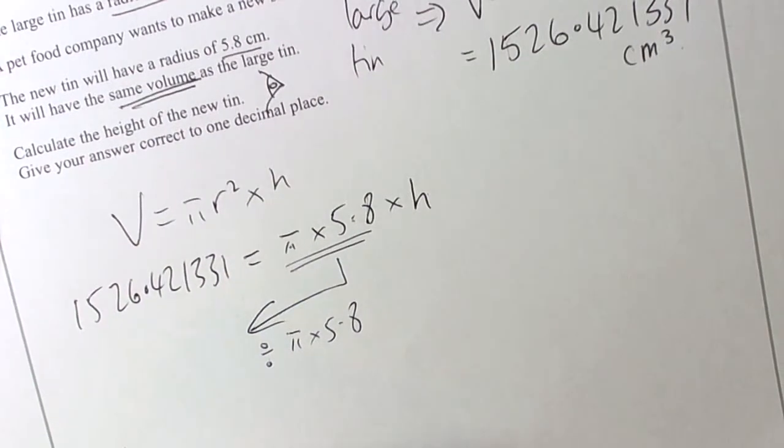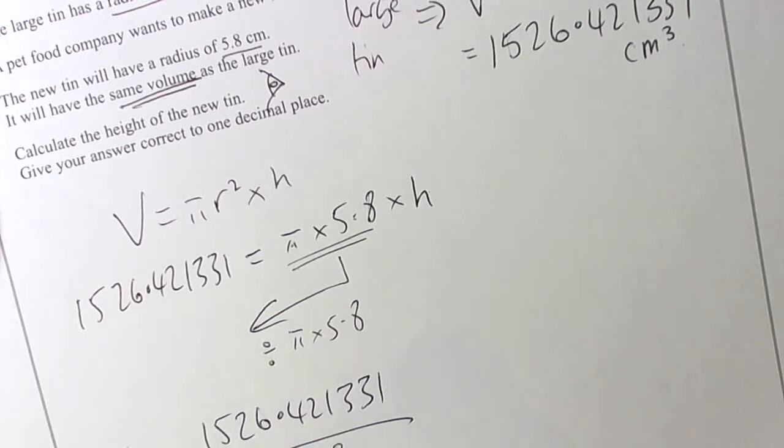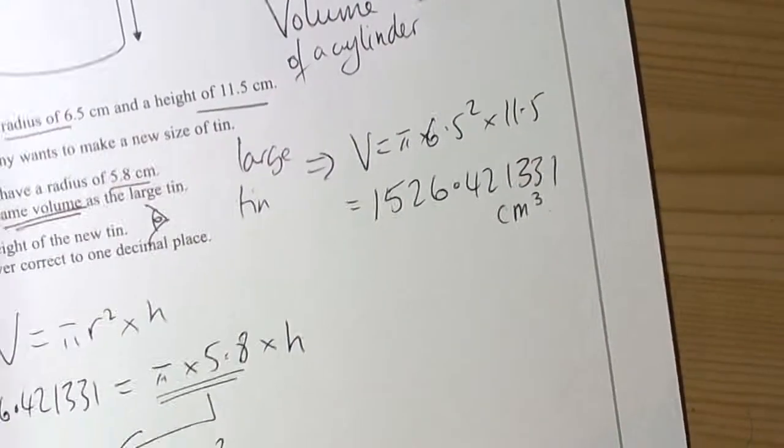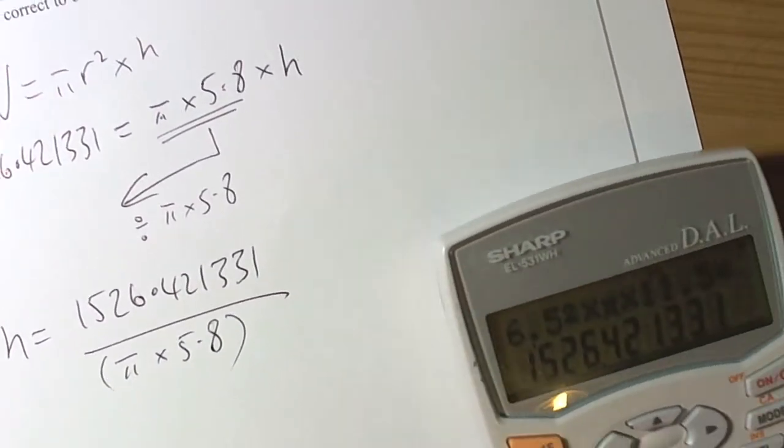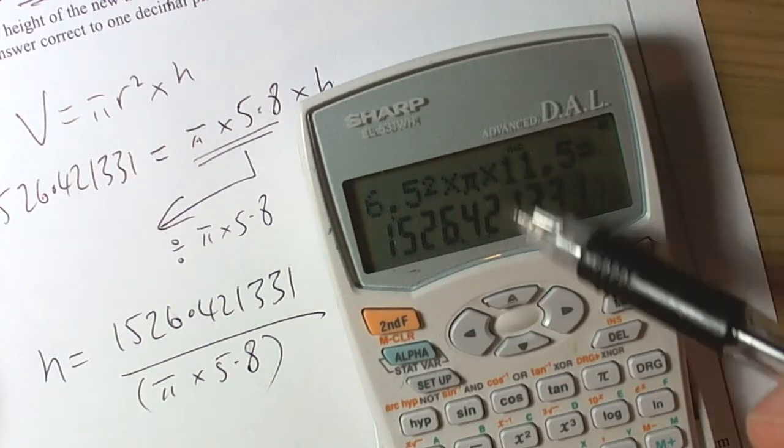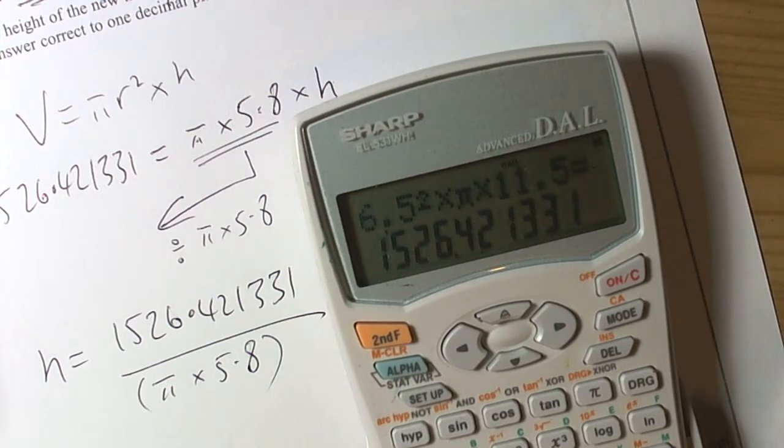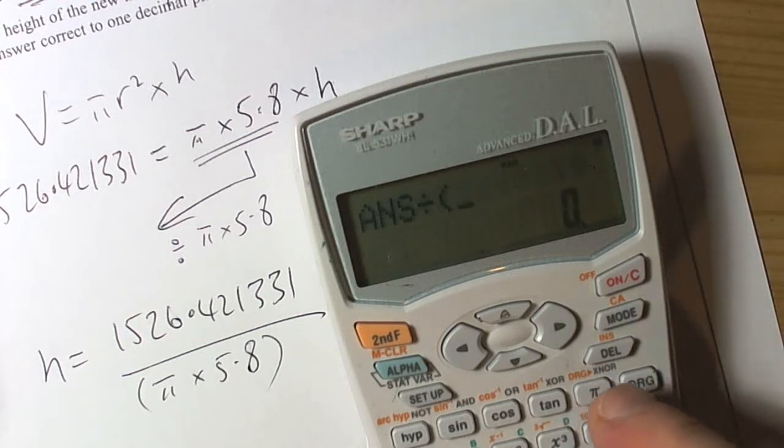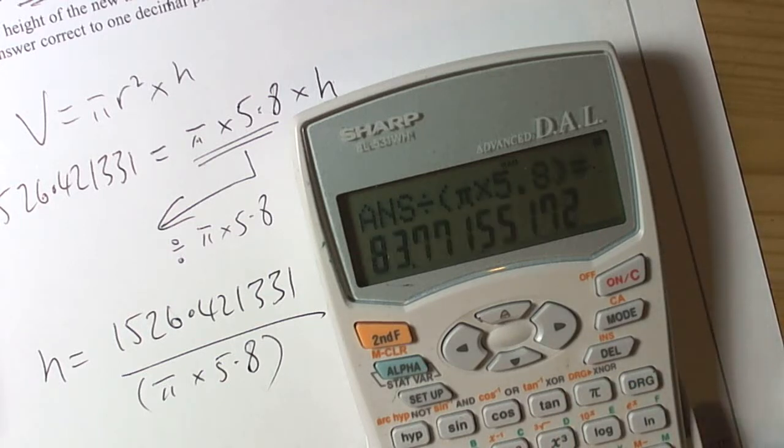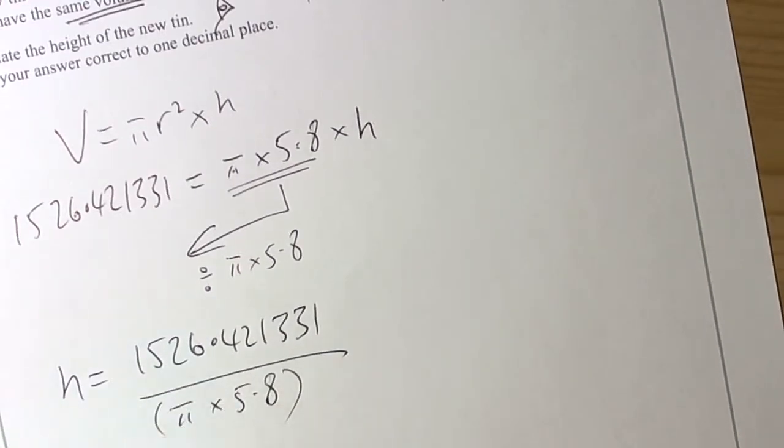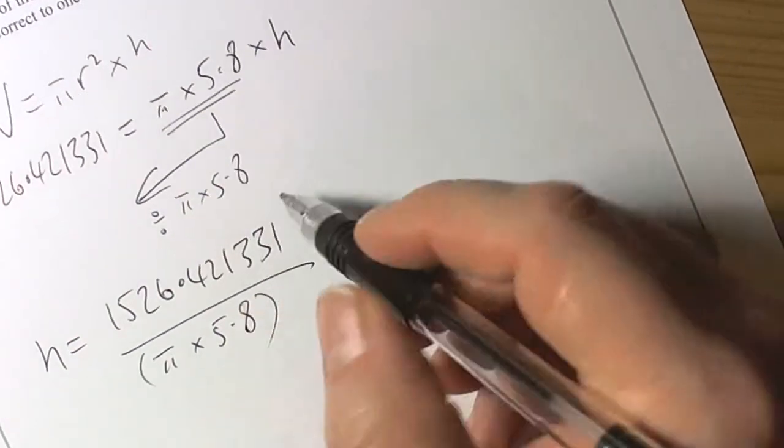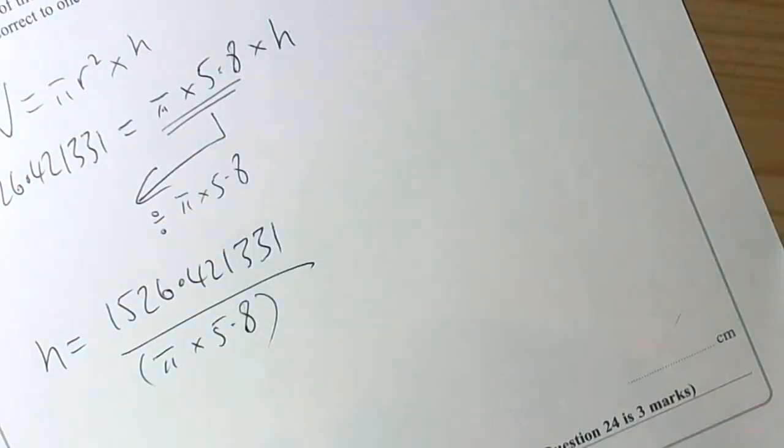So h is going to equal 1526.421331 divided by π times 5.8. Now most calculators you can just type as you see it. If you want to be safe then always put a bracket around the bottom part. Now I left the number in for the volume of the large tin. So now I can just divide by bracket π times 5.8, close the bracket, equals. So that gives us an answer of 83.7. That's because I've realized that's nowhere near right.